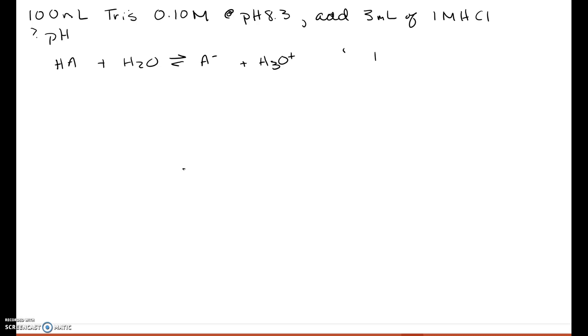The pKa for Tris buffer is 8.3. So if we have 0.1 molar total concentration of Tris buffer at pH 8.3, and the pKa is 8.3, that means we have half and half weak acid and conjugate base. So the concentration of HA is 0.05 moles per liter, and the concentration of A minus is 0.05 moles per liter. And we have 0.1 liters of each.